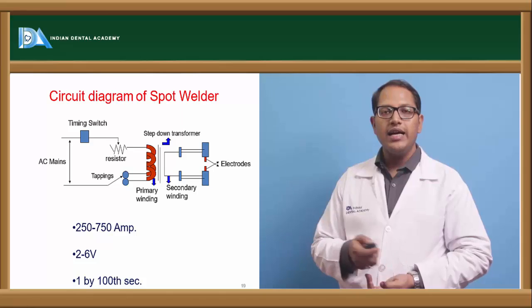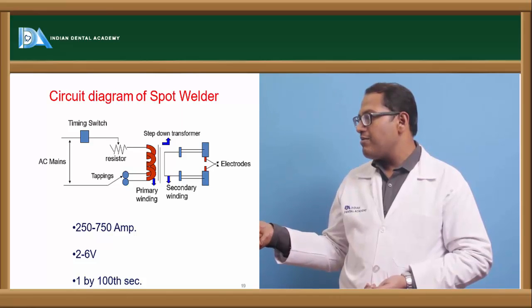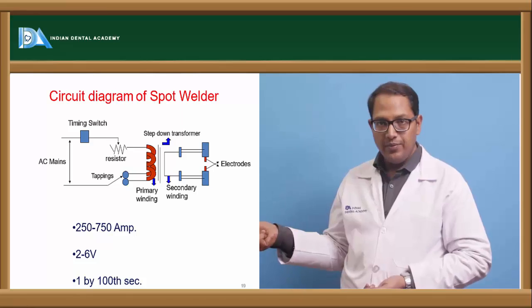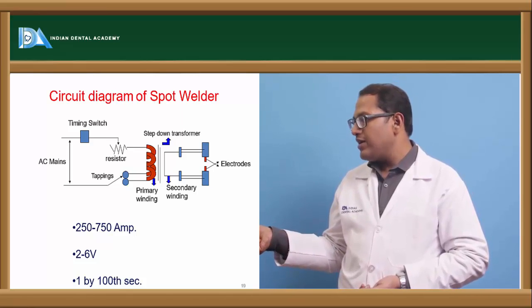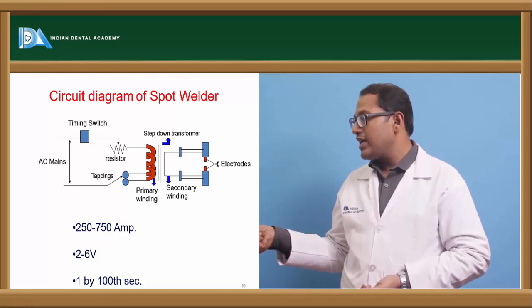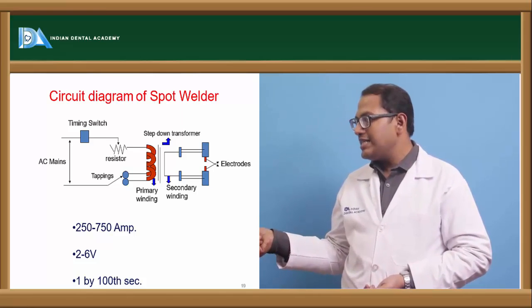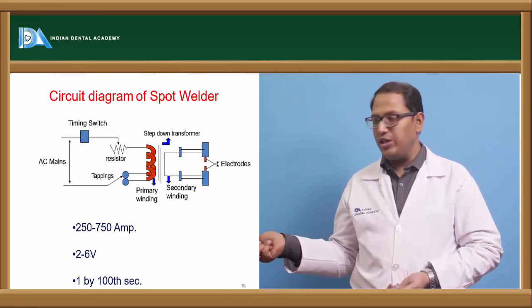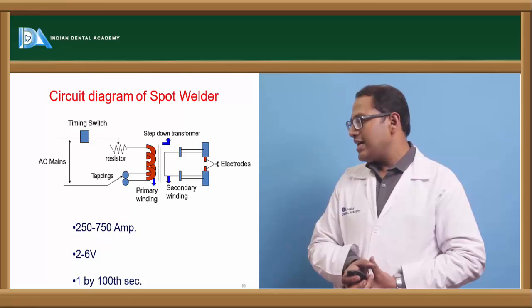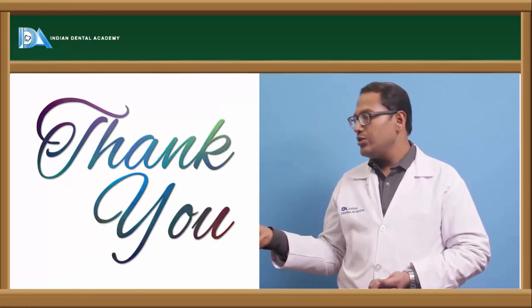Now to see the circuit diagram of a spot welder. We have an AC main which is activated between the timing switch and we have a resistor. This resistor will not allow the current to pass through this particular place or the heat to activate over there. We have two tapping things present and this is a primary welding which is happening. If the welding temperature is too high, there is this step down transformer which will not allow higher power to go to the electrodes. So here it will step down to a lower temperature and secondary welding will take place, then that will be transformed to the electrodes. The amount of energy that is required here is 250 to 750 amperes, 2 to 6 volts are required, and 1 by 100 second is required just to complete a welding.